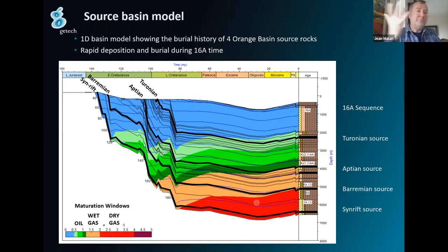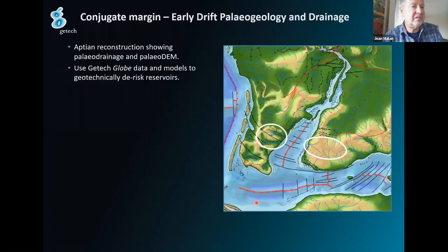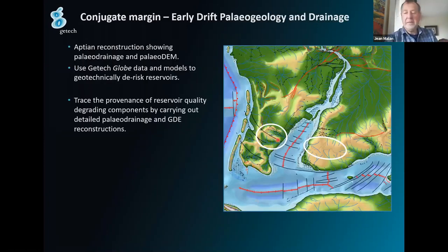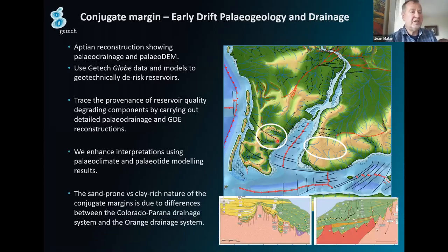A quick word on reservoir: coming back to those two profiles, there are lots of sand coming off the Colorado-Paraná drainage area and less sand from the Orange system. You can still see a proto-Orange river that hasn't yet captured the Vaal and all the other rivers up in the interior.